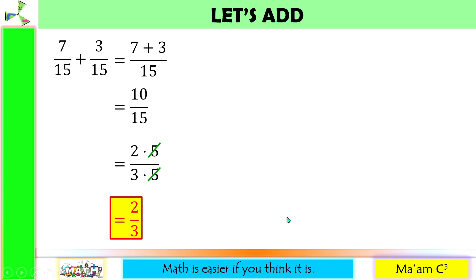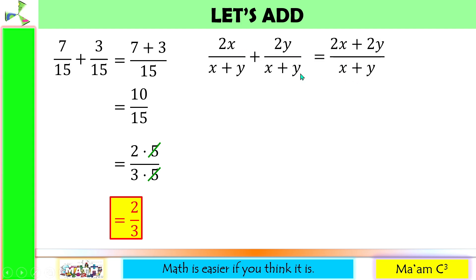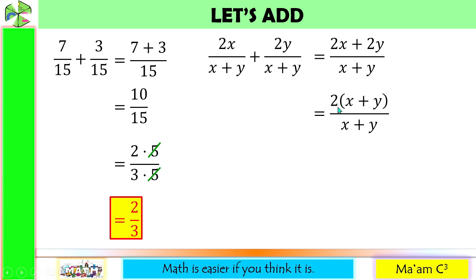Let's have another one. Let us add variables in our given. We simply add the numerators 2x plus 2y and copy the denominator. We can factor out a GCF in our numerator, and that is 2. 2x divided by 2 is x, and positive 2y divided by 2 is positive y. Let us copy the denominator by factoring out the GCF. We were able to see that there is a common factor — let us cancel them. So our final answer for this problem is simply 2.